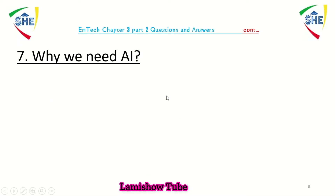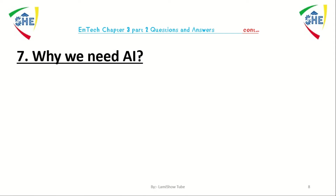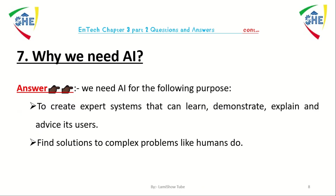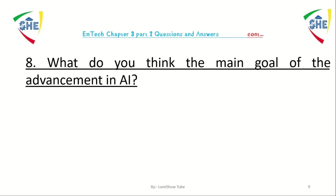Question number seven: why do we need artificial intelligence? We need artificial intelligence for the following purposes: to create expert systems that can learn, demonstrate, explain, and advise, and to create machines which find solutions to complex problems like humans do.